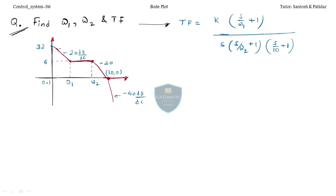Find ω₁, ω₂, and the transfer function. Here the transfer function structure is given, but some values are missing. Earlier we only had the magnitude plot; now we have both. Using both the Bode plot and the transfer function together, we find the missing values. Once we find ω₁ and ω₂, we can easily find k.